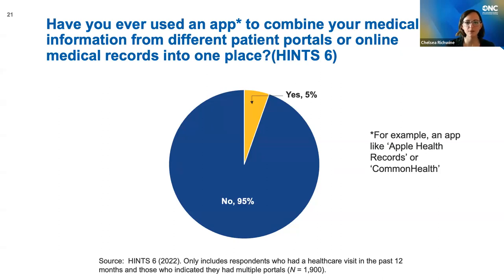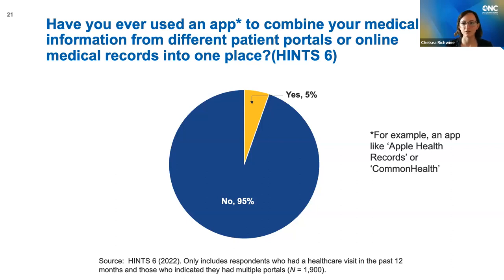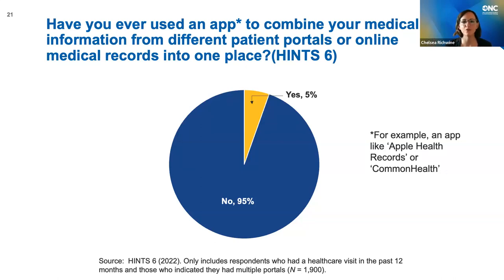On the HINTS survey, one of the questions asks what share of patients have more than one online medical record — about 44% indicated they had multiple records, through their primary healthcare provider, specialty providers, insurer, pharmacy, or lab. The follow-up question asked: among those with multiple portals, have you ever used an app such as Apple Health Records or CommonHealth to combine your medical information from different patient portals into one place? Only 5% of that 44% said yes they are doing this, while the vast majority — 95% — said no. This is something we'll continue to track over time.